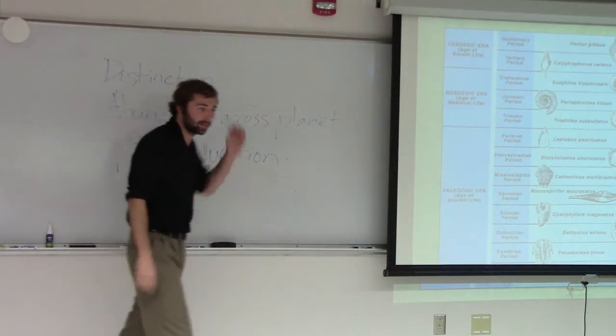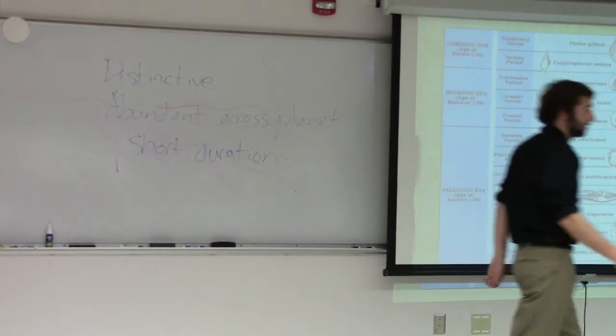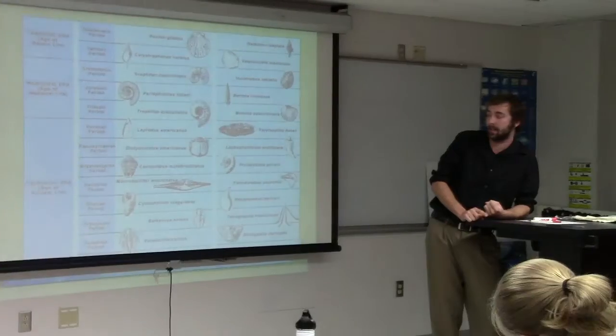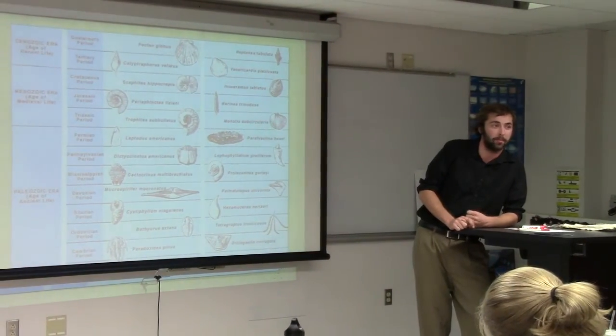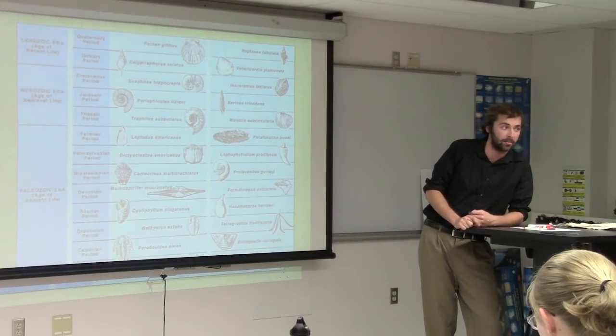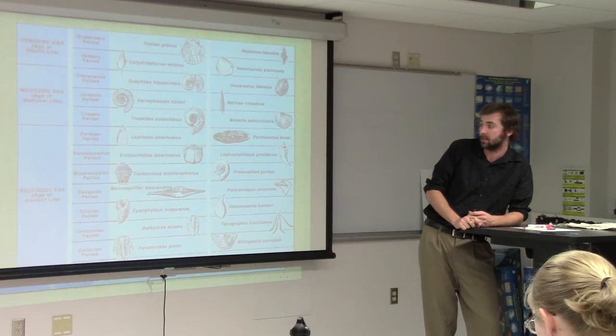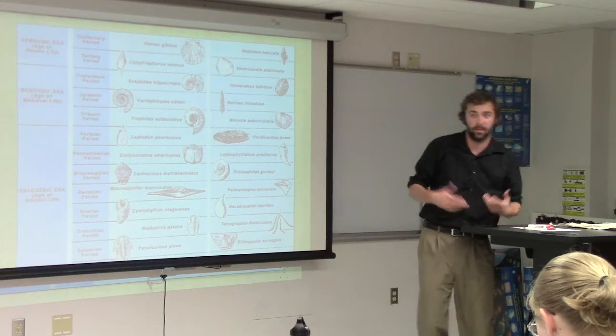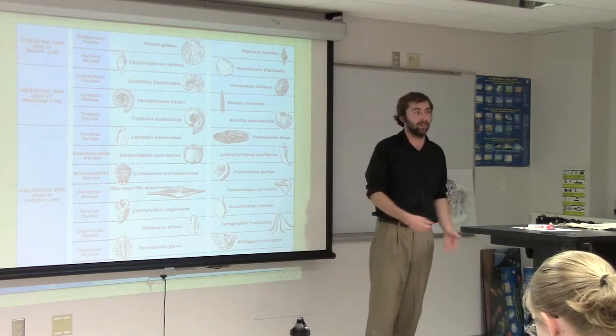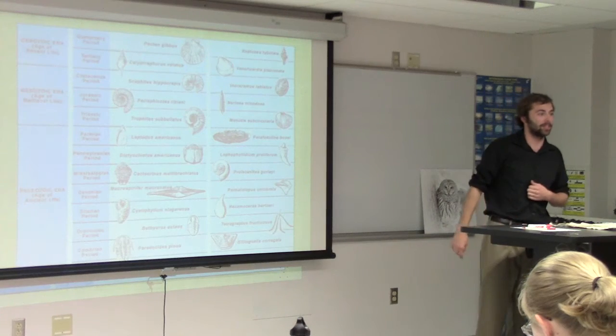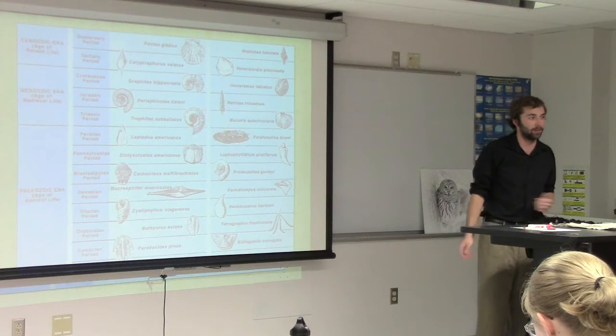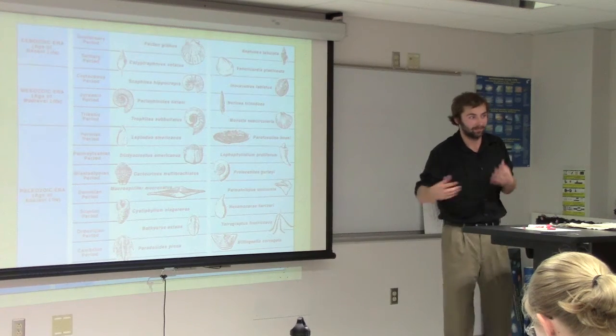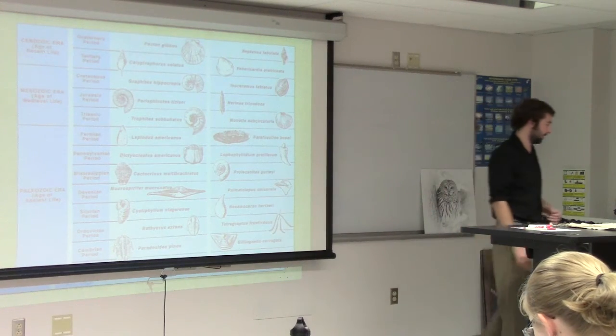So again, an index fossil is distinctive. It has characteristics where we can easily identify it as that specific species. And we want it to be abundant across the whole planet, so we can compare rocks from here to rocks in Africa, rocks in Australia. And we want that species to have a short duration of life or else it might be confusing. It's not going to be very helpful if Stephen's creature that he made was alive for two million years and it was only found within this room right here. We're not going to be able to correlate that to any rock in another continent.